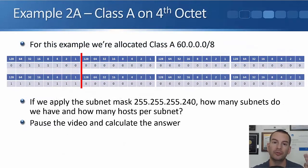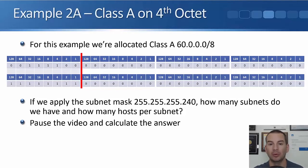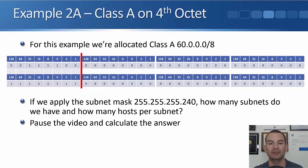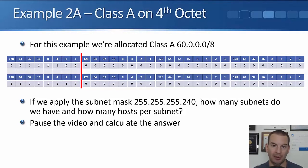Let's move on to another example. This one will subnet a class A where we're going to subnet on the fourth octet — the previous example was a class B on the fourth octet, this is a class A on the fourth octet. We've been allocated 60.0.0.0/8. If we apply the subnet mask 255.255.255.248, how many subnets do we have and how many hosts per network? Pause the video and figure it out.